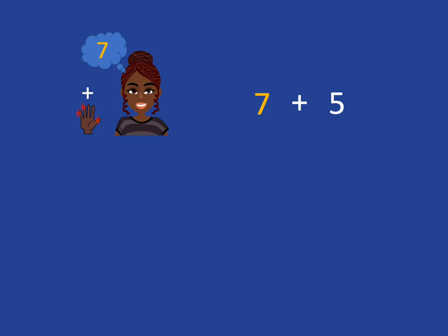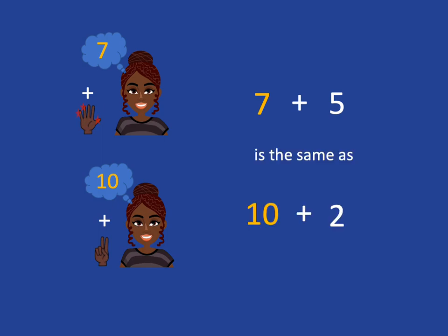Once I've taken those three fingers and put them together with the 7, I've got 10 in my head and I'm left with two fingers standing up. Now I know 7 and 5 is just the same as 10 and 2. It's very easy to get the answer to 10 and 2. 10 and 2 is 12.